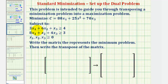We'll be using the first two inequalities and the objective function to set up a matrix without using slack variables. We'll use the coefficients as the entries into our matrix. The first two rows come from our first two inequalities, and the third row comes from the objective function.